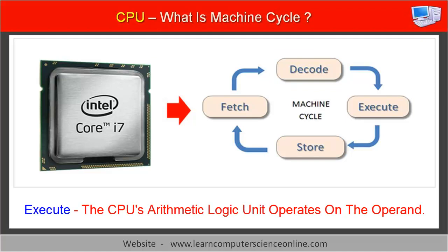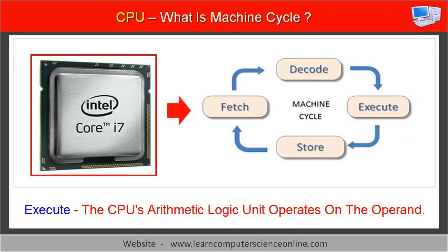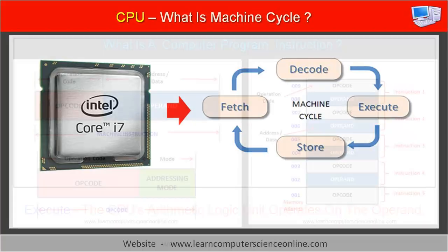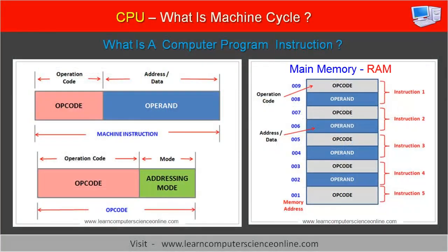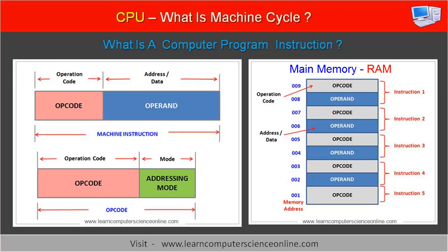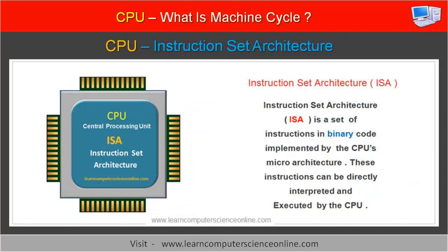The execute part of the machine cycle includes the actual execution of the program instruction by the CPU. The arithmetic logic unit of the CPU then performs the desired operation on the operand. Each program instruction consists of two parts: first, the OP code, and second, the address of the operand. The OP code directs the arithmetic logic unit, ALU, to operate on the data as per the instruction set architecture of the CPU. The instruction set architecture for a processor chip is a set of binary commands supported by the CPU.